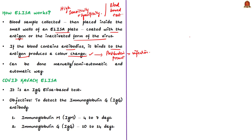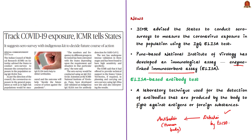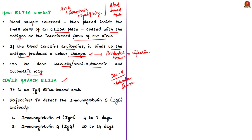Whenever you come across such tests that frequently appear in news articles, try to know the simple science behind them — for example, in a previous year there was a question on Cas9 protein, a molecular scissor. ELISA tests can be done manually, semi-automatically, or automatically. The sero-survey advised by ICMR would be conducted using an IgG ELISA kit. Scientists at the ICMR National Institute of Virology, Pune, have developed and validated an indigenous IgG ELISA test for antibody detection for the SARS-CoV-2 virus, also called COVID Kavach ELISA. This test is designed to detect the Immunoglobulin G (IgG) antibody.